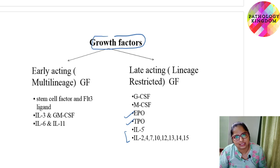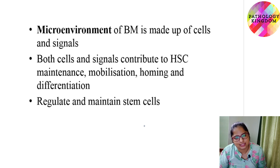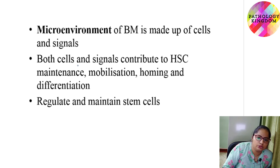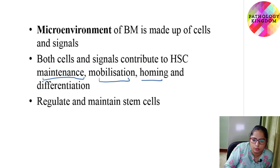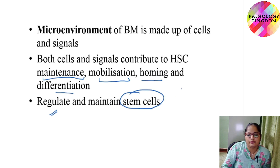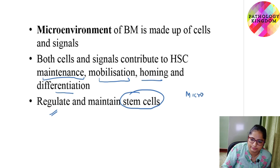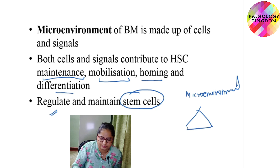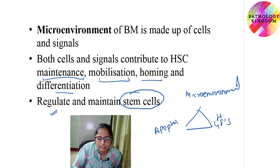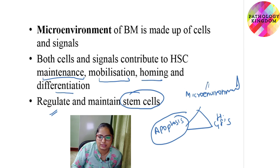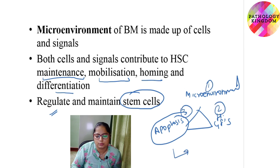These growth factors are secreted by bone marrow microenvironment cells — that is, stromal cells — comprising osteoblasts, fibroblasts, fat cells, and stem cells. Both cells and signals contribute to hematopoietic stem cell maintenance, mobilization, homing, and differentiation, and they regulate and maintain the stem cells. If there is a balance between the microenvironment, hematopoietic growth factors, and apoptosis — where all unwanted cells are removed by programmed cell death — then hematopoiesis is regulated.